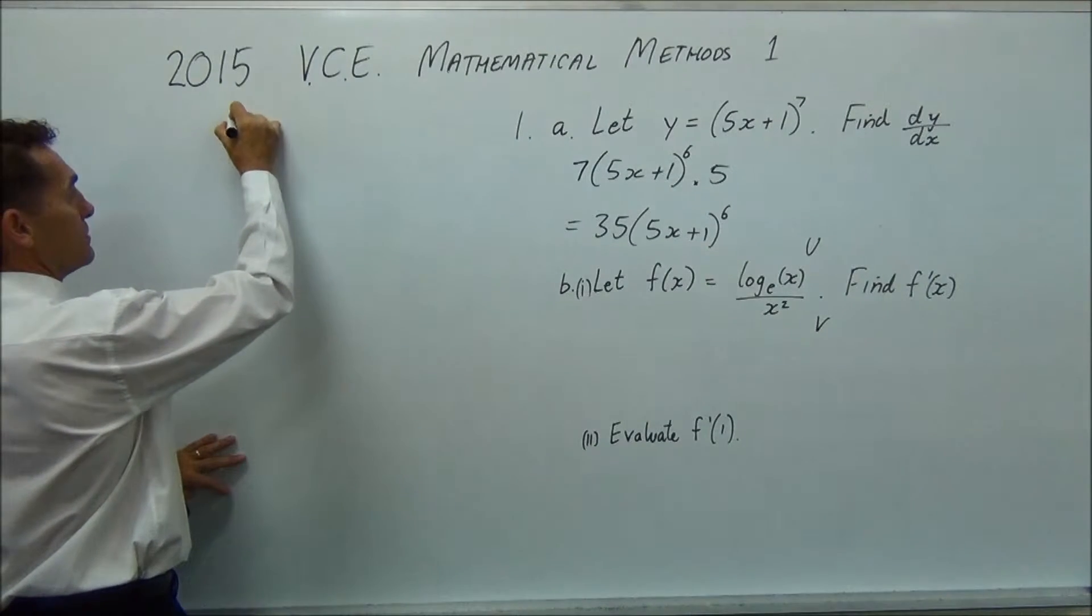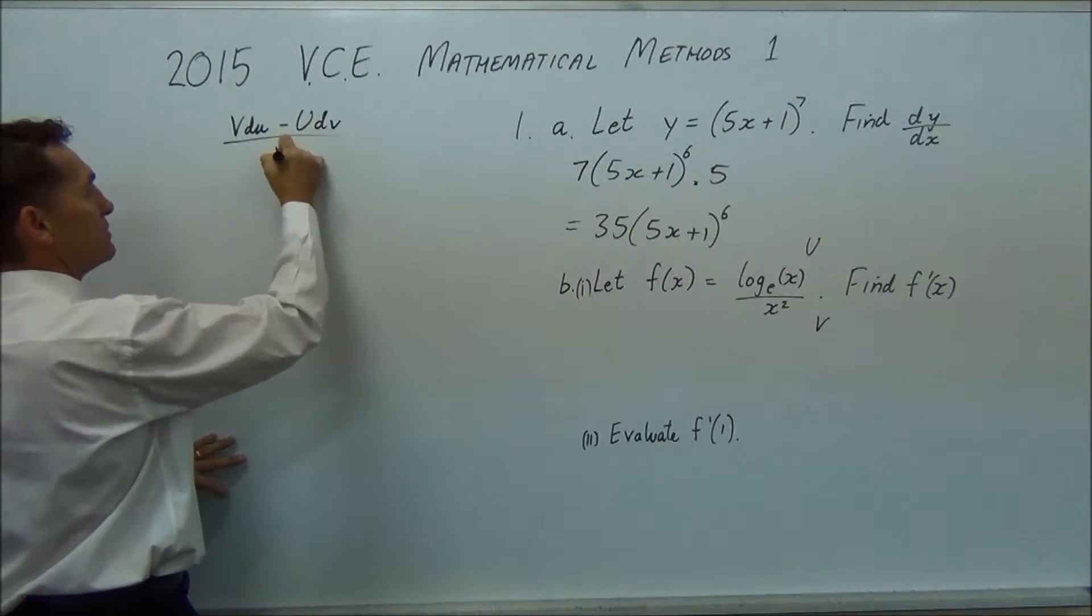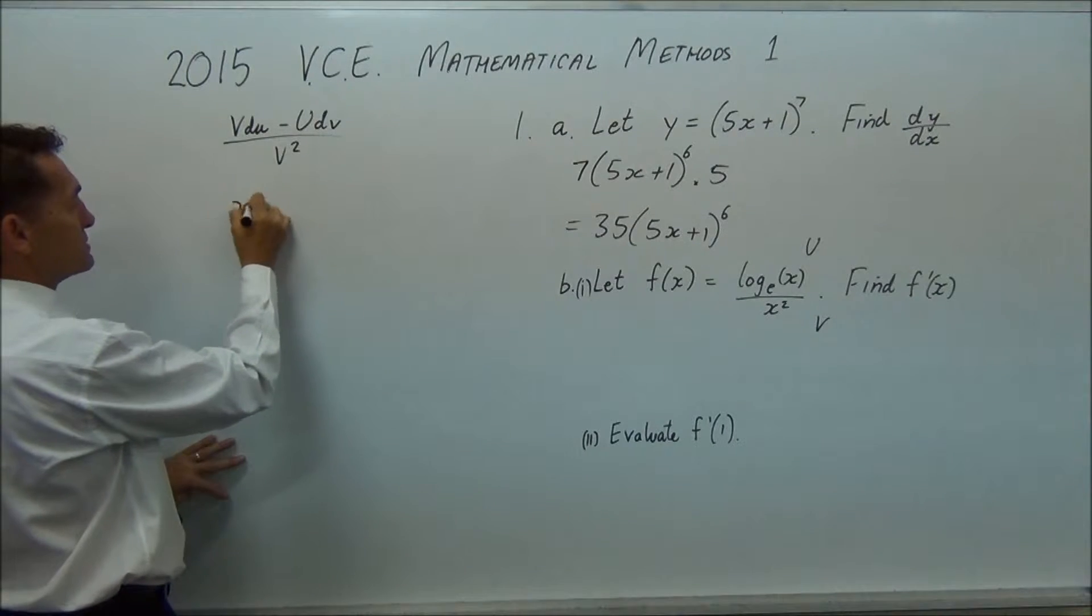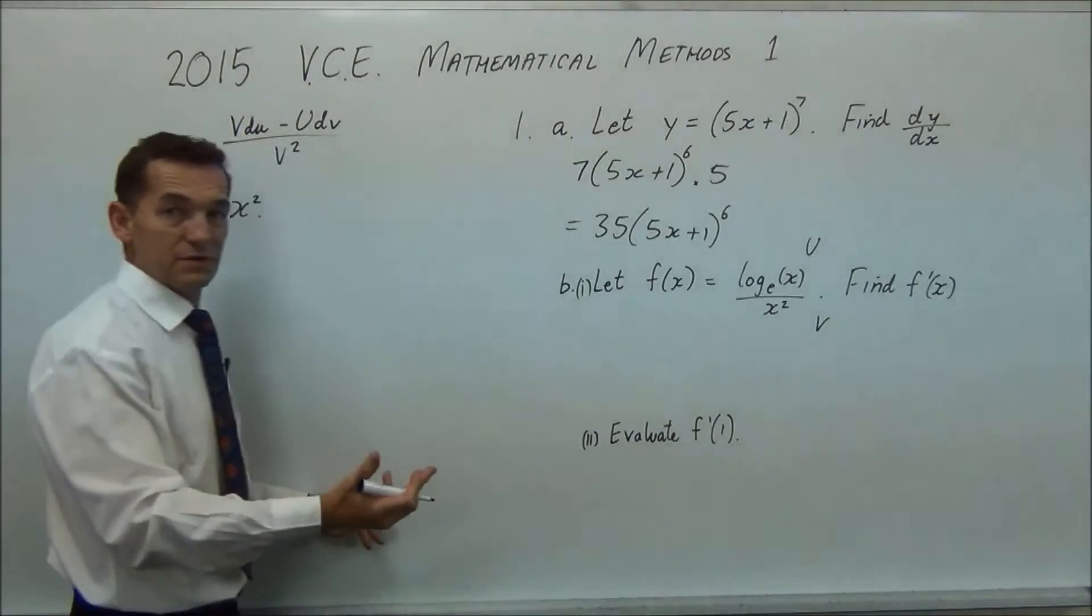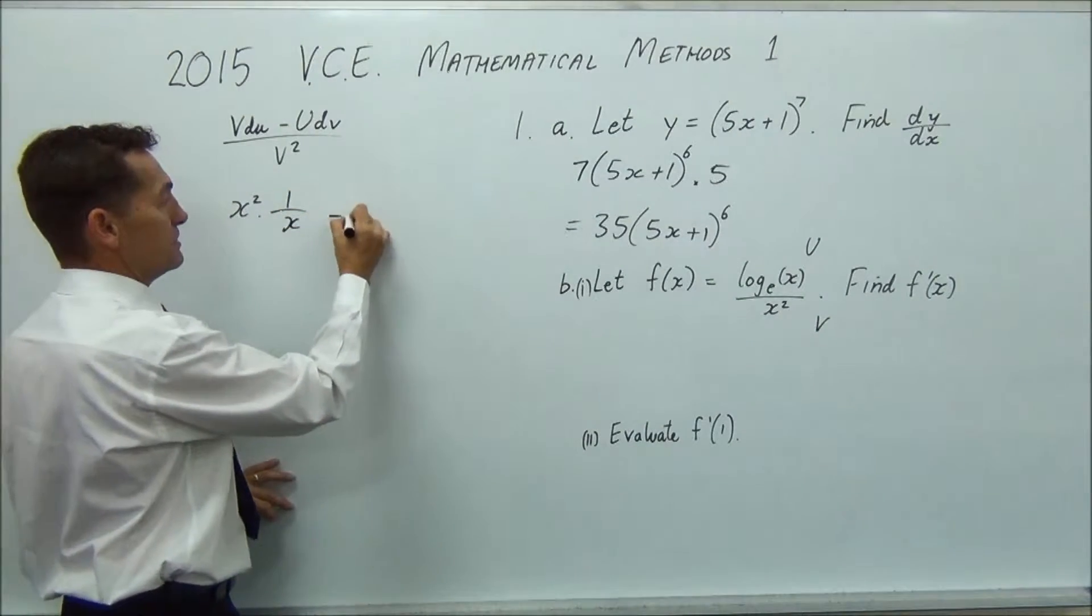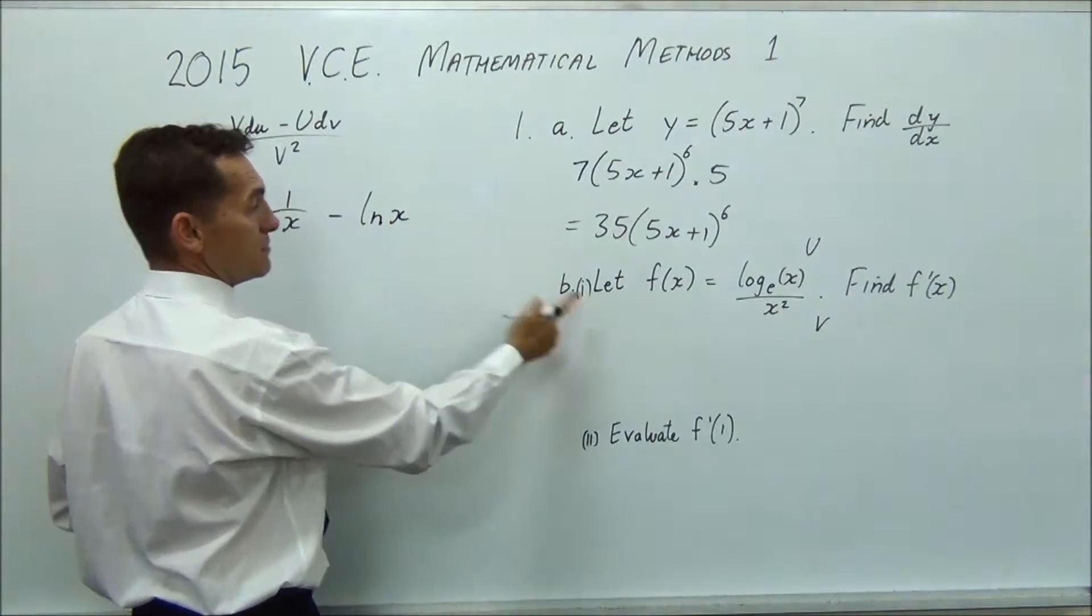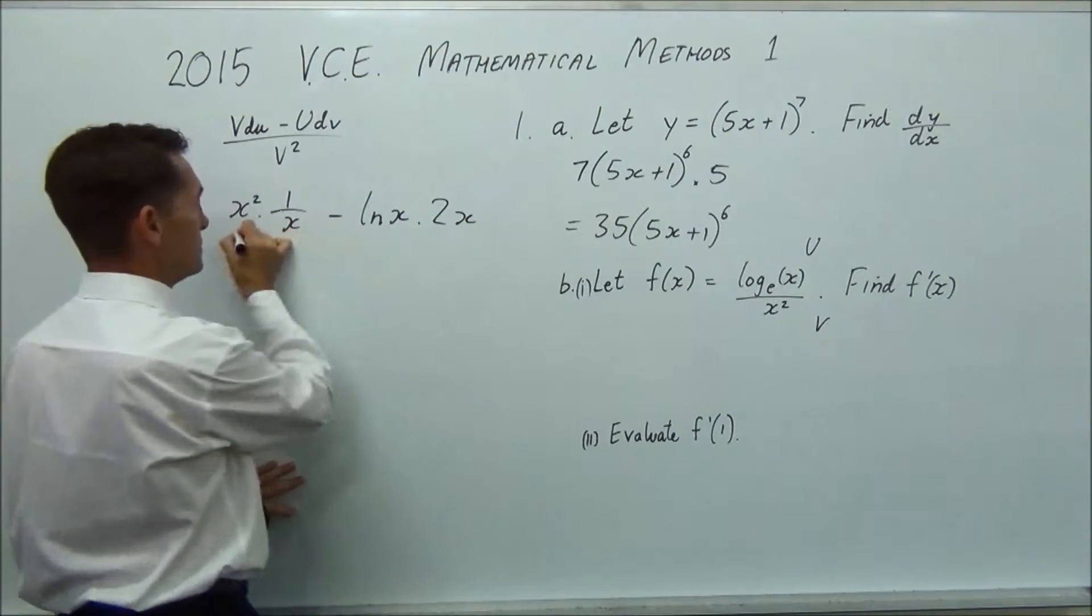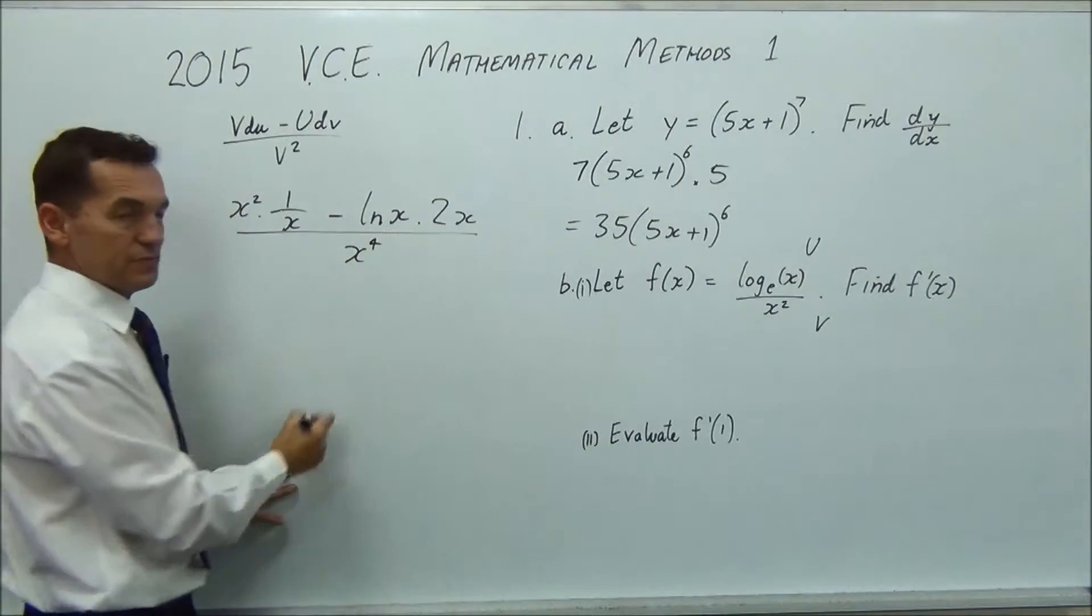So v du, so we're going to get x squared multiplied by, differentiate log x and you get 1 over x minus u, well that's ln x multiplied by, differentiate the bottom, well that's 2x all over x squared, squared, which is x to the 4.